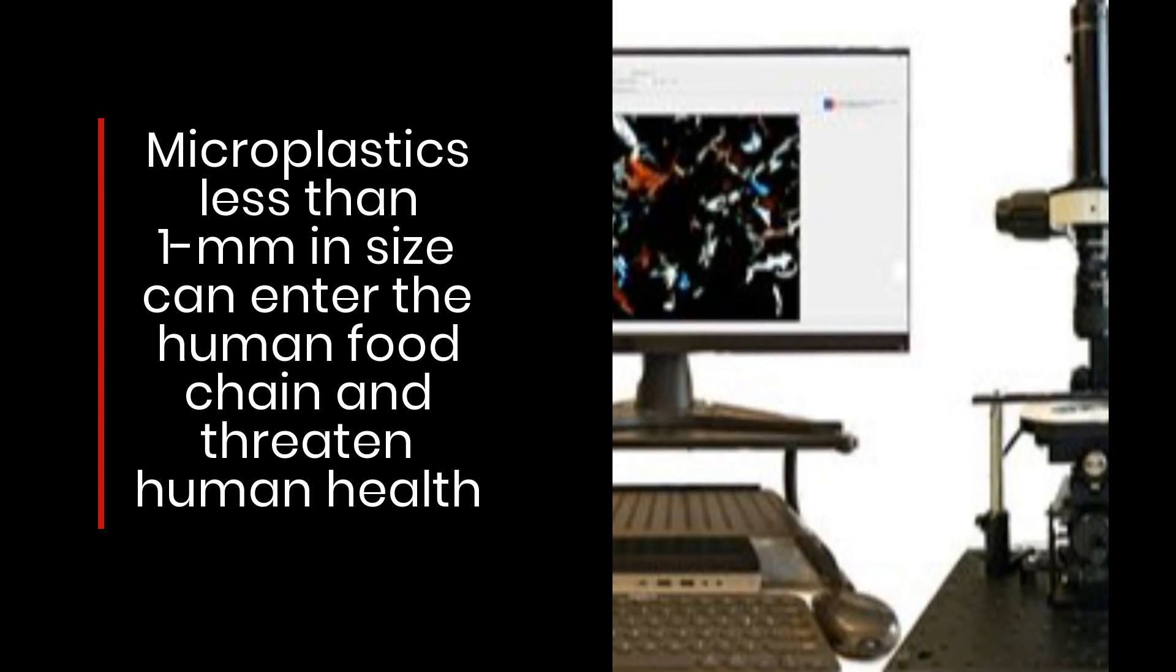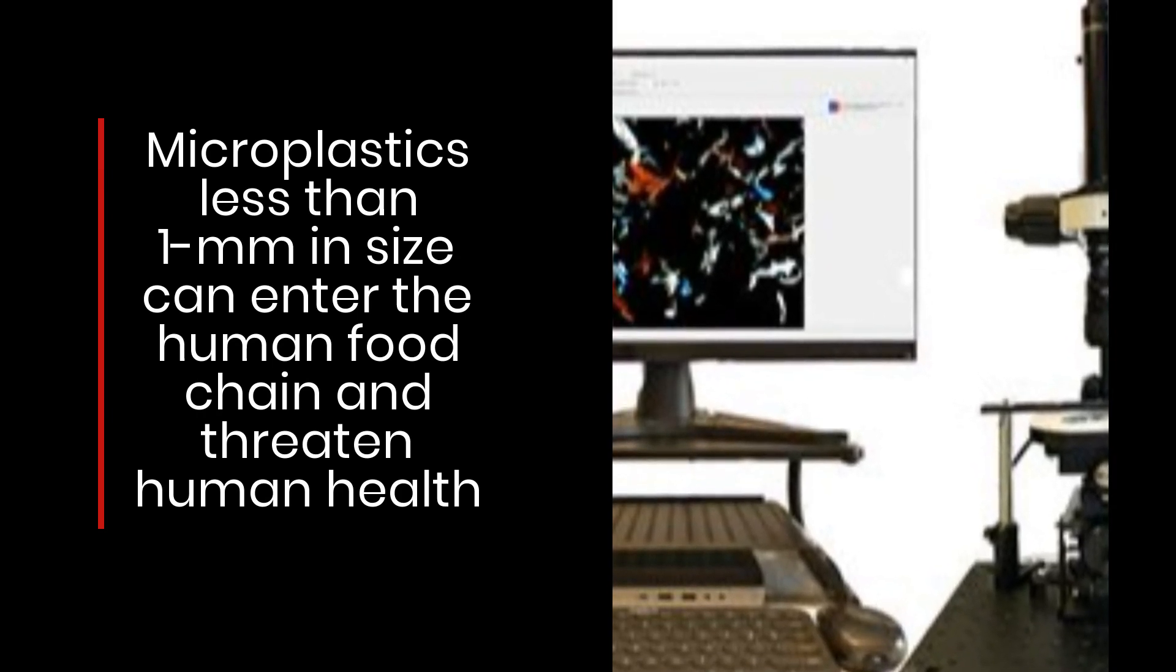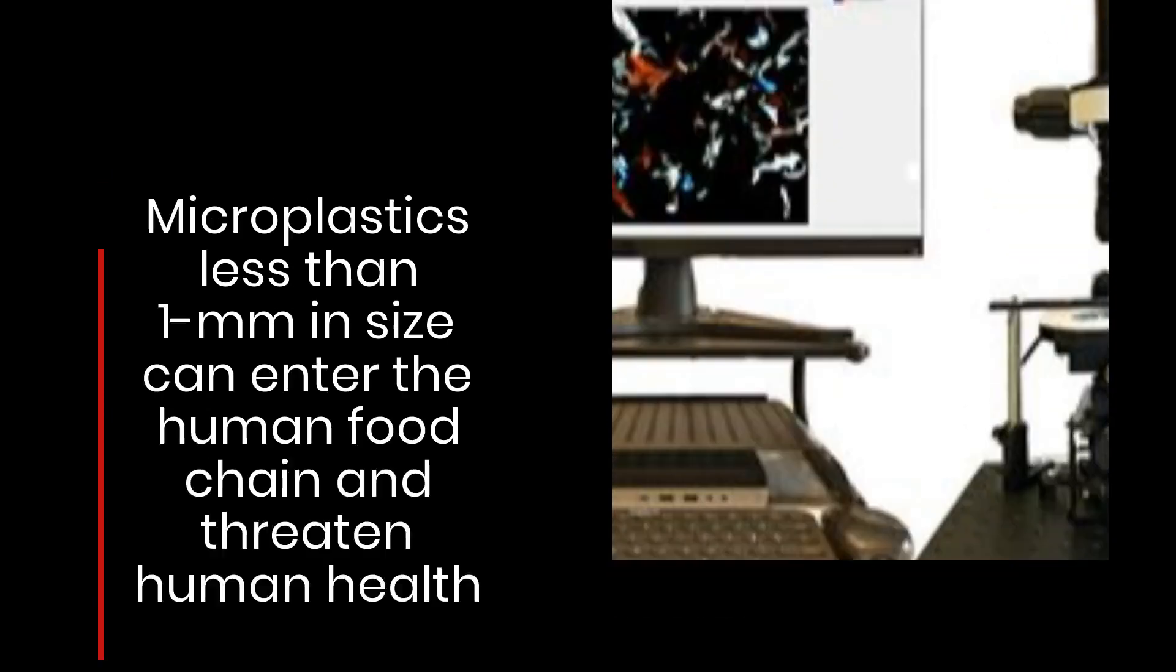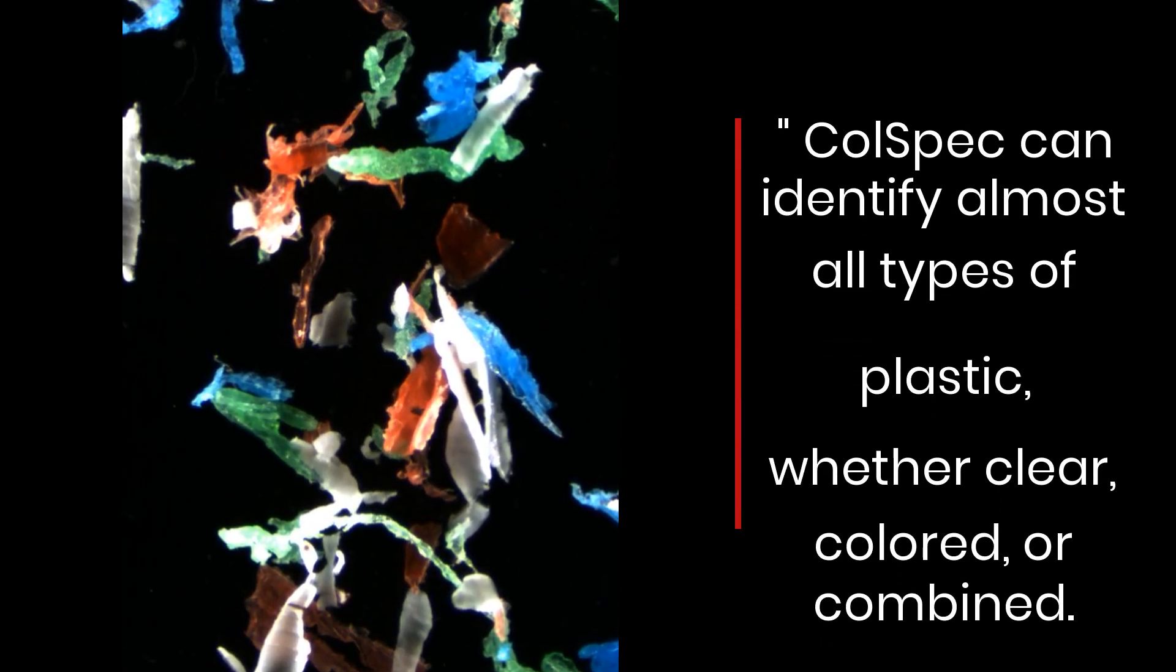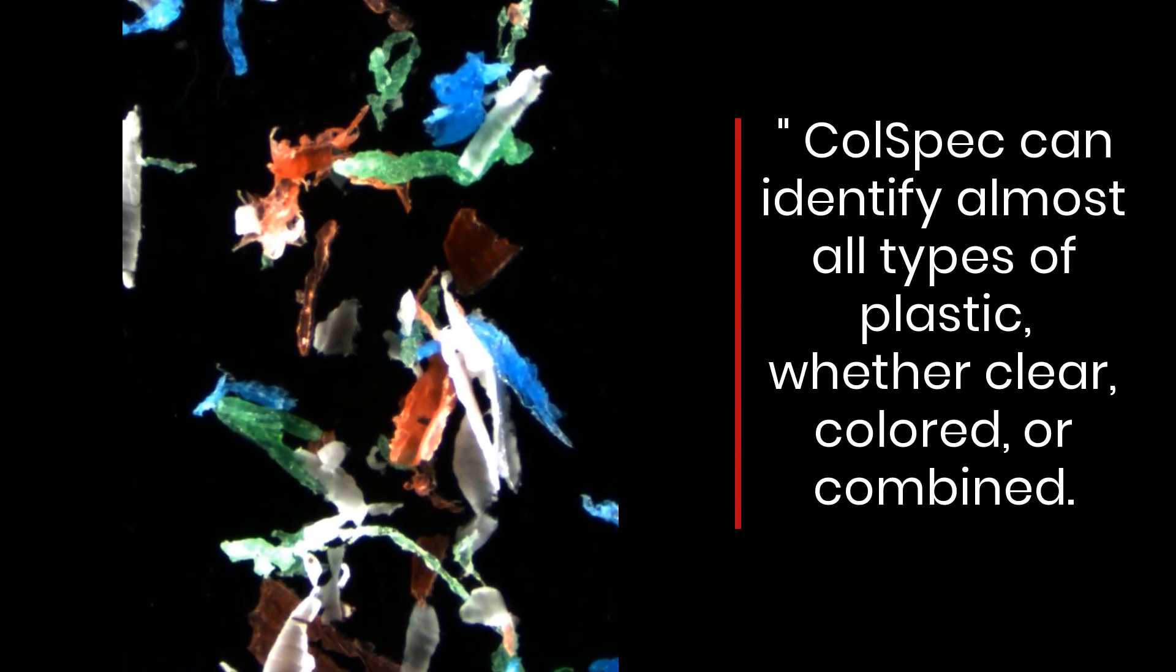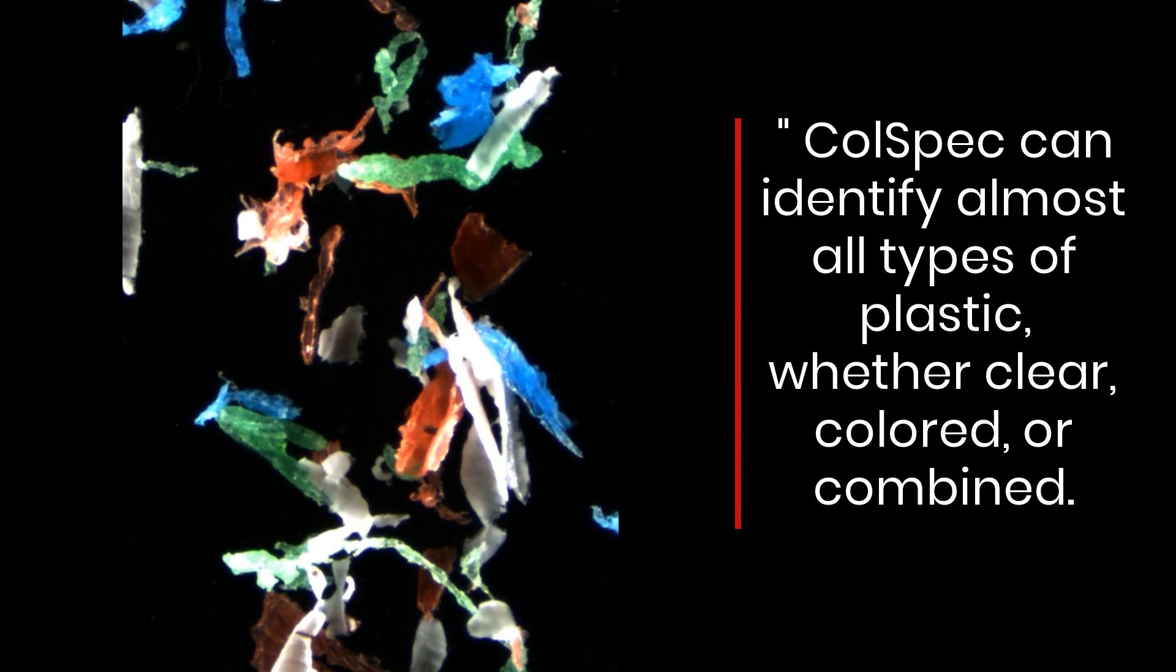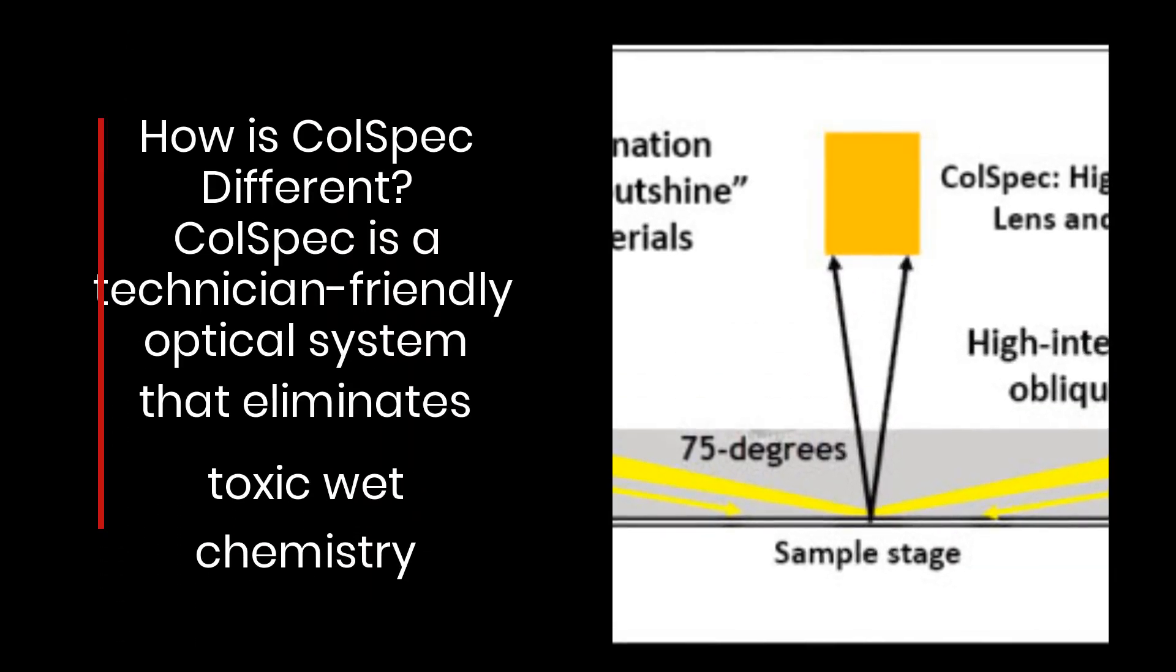Microplastics less than one millimeter in size can enter the human food chain and threaten human health. ColSpec can identify almost all types of plastic, whether clear, colored, or combined. How is ColSpec different? ColSpec is a...